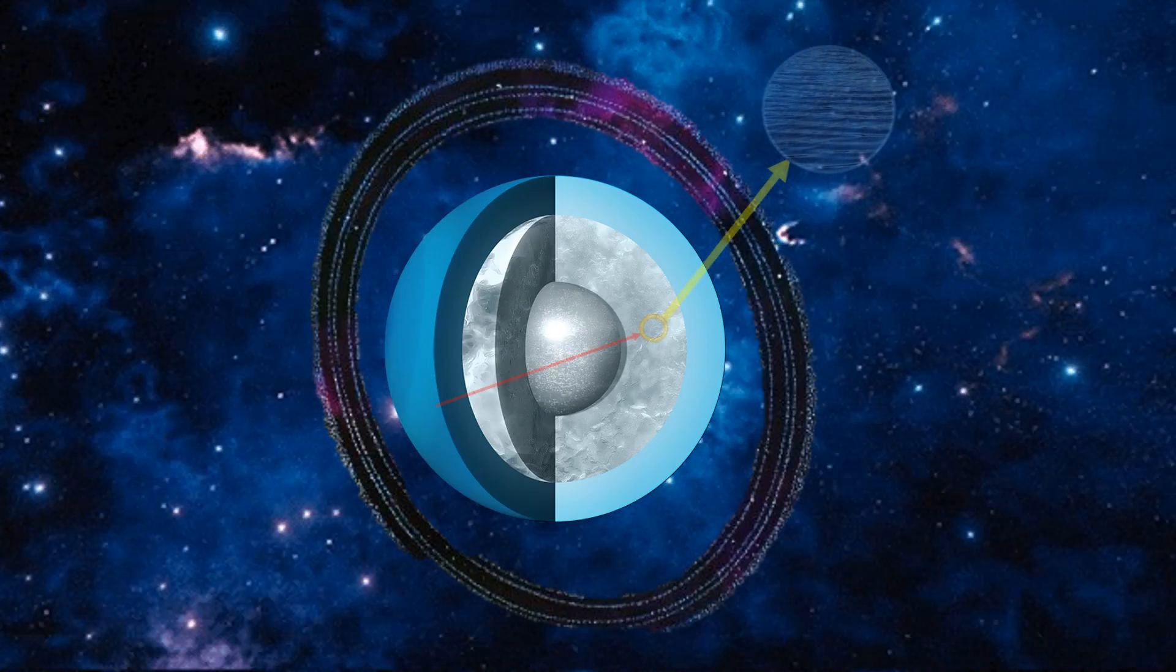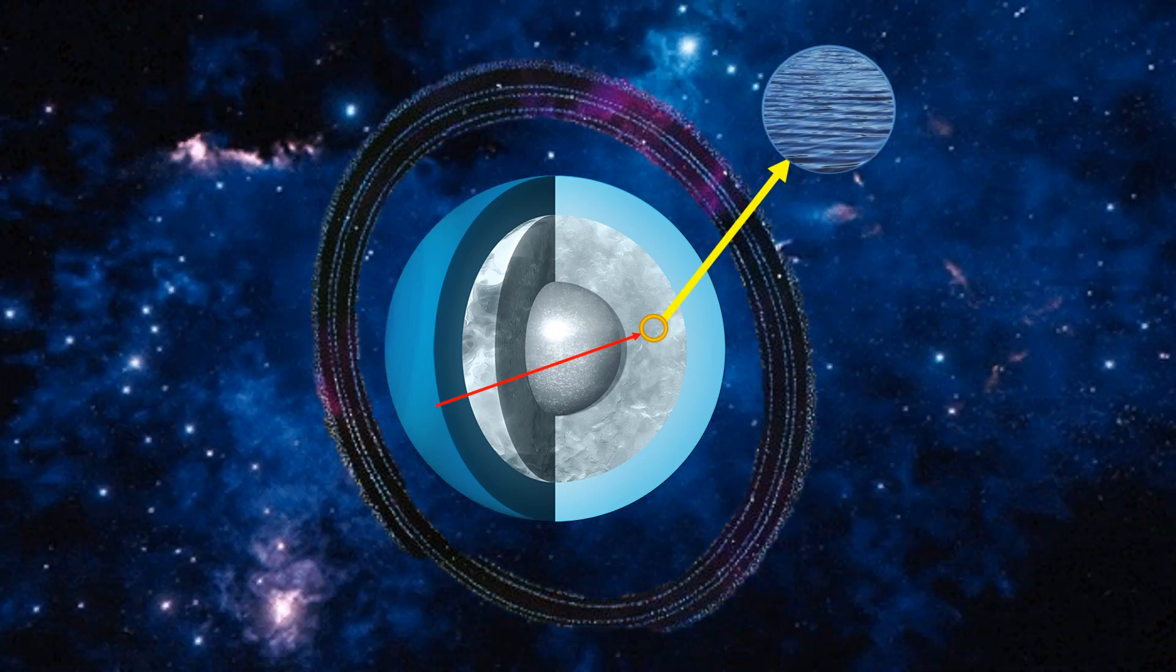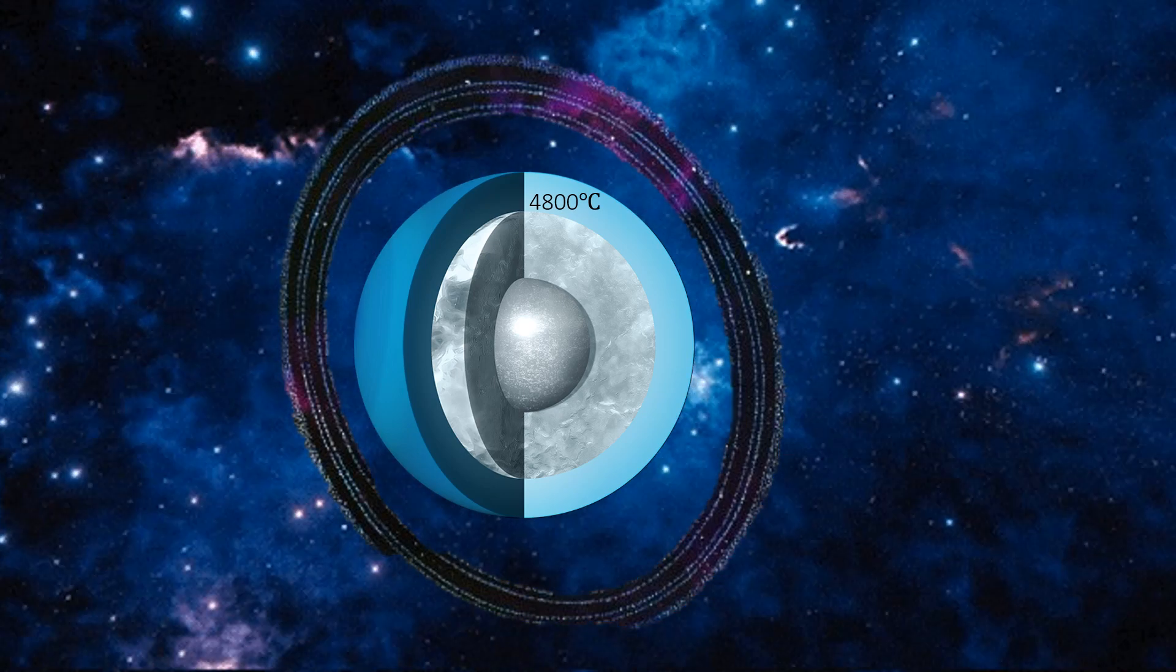80% of Uranus' core is made of liquid. Some of the liquid is water. Although Uranus is really cold, the temperature in the core is 4800 degrees Celsius.